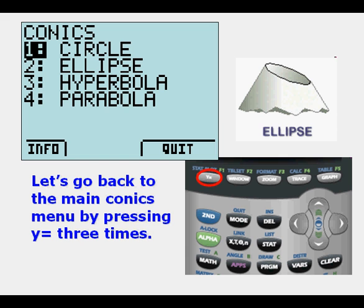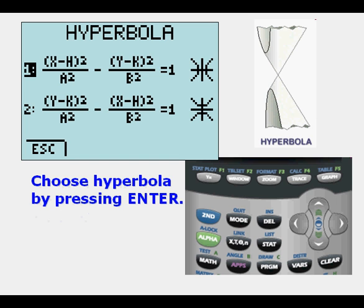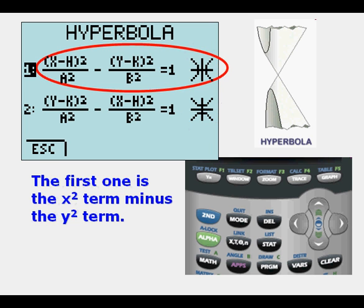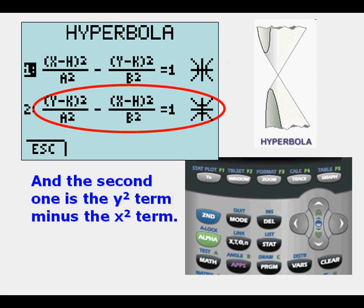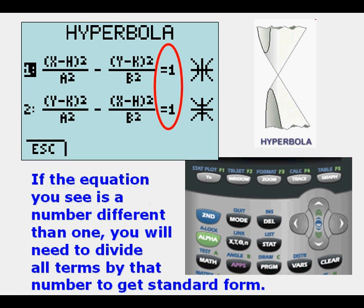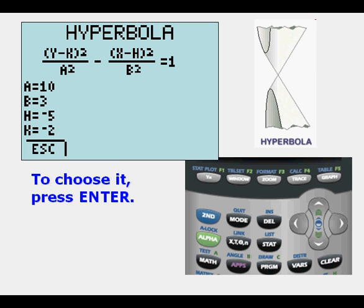Let's go back to the main menu by pressing Y equals 3 times again and arrow down twice to get to hyperbola. We can choose hyperbola just by pressing Enter. Note we have two different types of hyperbolas where we have two separate curves oriented differently. The first one is the X squared term minus the Y squared term. The second one is the Y squared term minus the X squared term. Note that the right side of the equation in standard form is 1. If the equation you see is a different number than 1, you will need to divide all terms by that number to get to standard form. Let's arrow down to get to the type 2 hyperbola and press Enter.